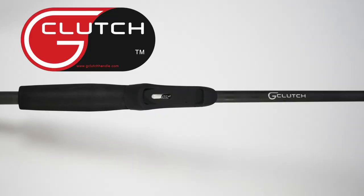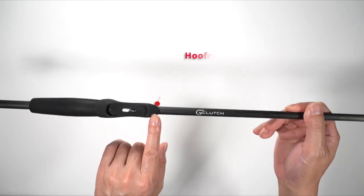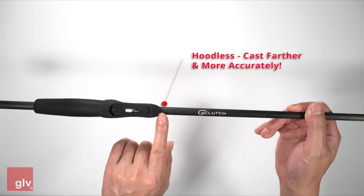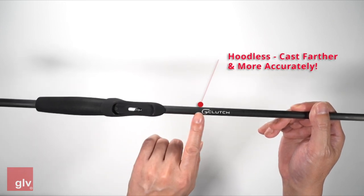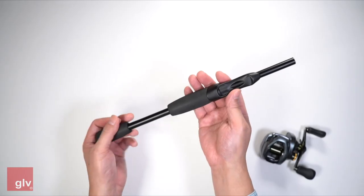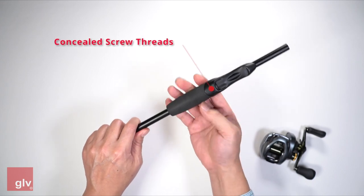The G-Clutch handle system will improve your entire fishing experience. The hoodless design feature allows you to cast farther and more accurately without any barrier on your rod. G-Clutch has concealed screw threads.